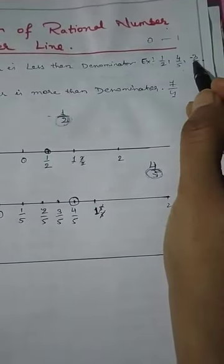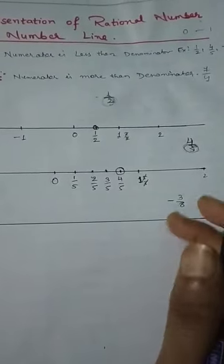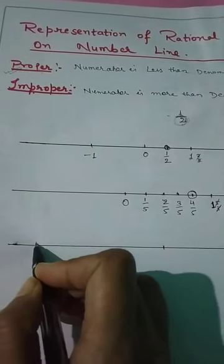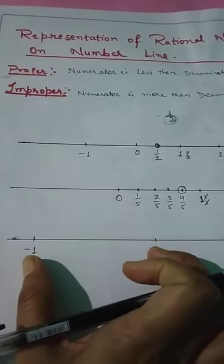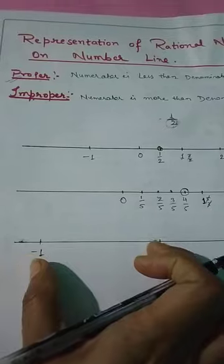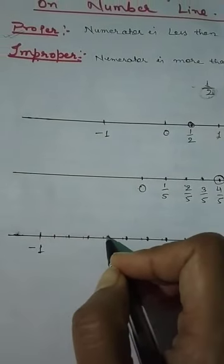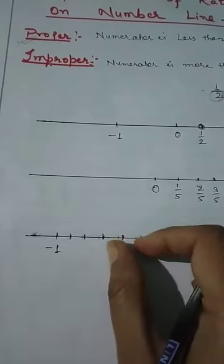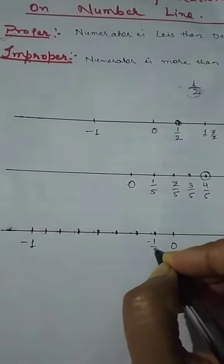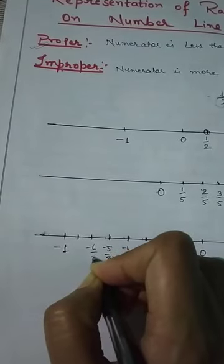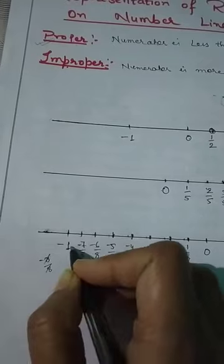Now suppose you have to plot -3/8 on the number line. This is also a proper rational number, but negative, so we take 0 to -1 on the left side. The denominator is 8, so we divide the segment from 0 to -1 into 8 equal parts. The points are labeled -1/8, -2/8, -3/8, -4/8, -5/8, -6/8, -7/8, and -8/8 which equals -1. We need to plot -3/8, so that third point from 0 is our answer.